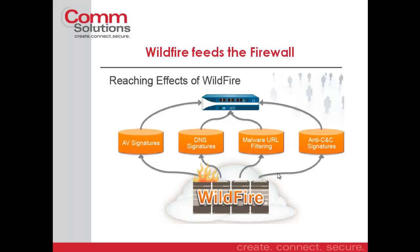WildFire feeds our firewall. When WildFire determines that there is malware, it can deliver those signatures in the forms of an AV signature, a DNS signature, or a specific malware URL. Palo Alto now has their own URL filtering engine called PAN-DB. Any URLs found as part of a WildFire exchange to be malware can dynamically be added to the malware category within the Palo Alto PAN-DB URL filtering engine. We can also create signatures to block those command and control types of malware.